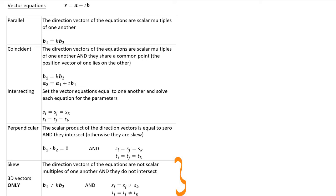In skew vectors, the direction vectors of the equations are not scalar multiples of one another, and they do not intersect.